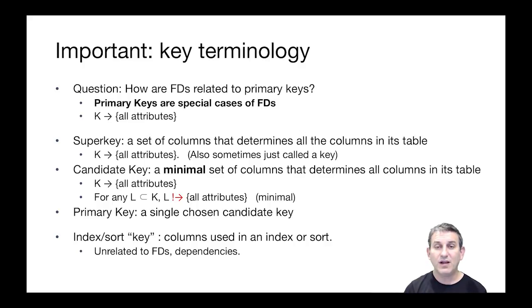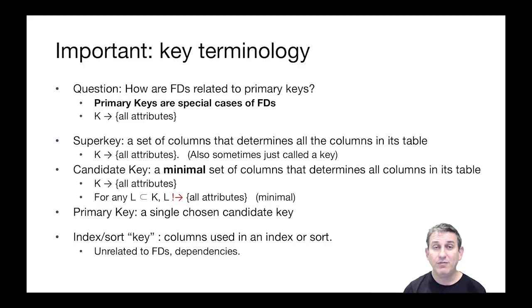We'll use the term superkey to mean a set of columns that determines all the columns in its table — exactly of the form K determines all attributes. A candidate key is a minimal set of columns that determines all columns in its table: K determines all attributes, and for any proper subset L of K, L does not determine all the attributes. So K is as small as it can be — you can't remove any attribute and keep its keyness. A primary key is just a candidate key that we've chosen for the relation. All candidate keys could be primary keys; we pick one and call it the primary key.